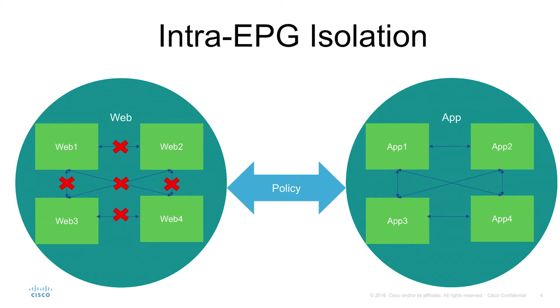This would have taken several ACLs or firewall rules to set up in traditional networking. Now it's a flip of the switch and providing one contract, which may have already been created for consumption. So web one can talk to app one, web one can talk to app two — no problem — but web two can't talk to web one anymore.